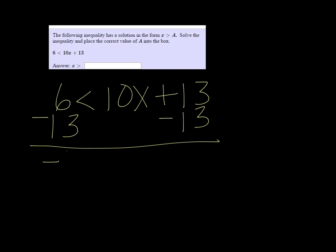We have 6 less than 10x plus 13. I want to subtract 13 on both sides, trying to get the variable by itself. So we get negative 7 is less than 10x.